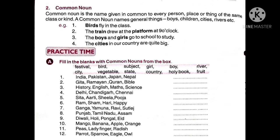The boys and girls go to study and play. Here, boys and girls are common nouns. If we used names like Raghav, Rahul, Ramesh instead of boy — those would be proper nouns. But together they all fall in the category of boys, so boys is a common noun. Similarly, girls is a common noun. Now, the cities in our country are quite big — here cities is the common noun. If we named specific cities like Yamunanagar, Ambala, Chandigarh, those would be proper nouns. But here only cities is written, so cities is the common noun.